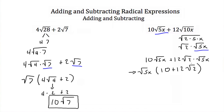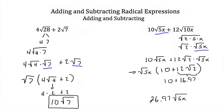If you want, you can convert 12 square roots of 2 — this is approximately 16.97. Add 10 to that and you get 26.97, still multiplied by the square root of 5x.